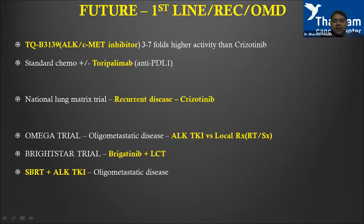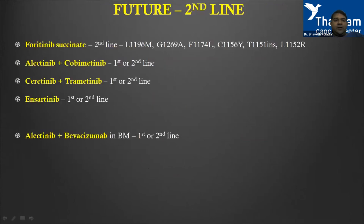In future, oligometastatic lung disease may be treated with curative intent using ALK TKI plus local therapy. New molecules in the pipeline include foratinib succinate in the second-line setting, which is very effective against resistant mutations. Future combinations include alectinib plus cobimetinib, ceritinib plus trametinib, and ensartinib.